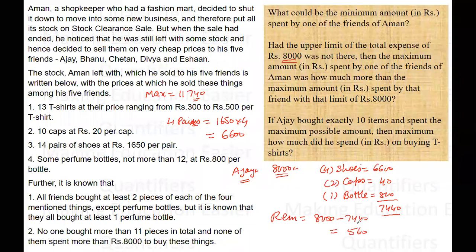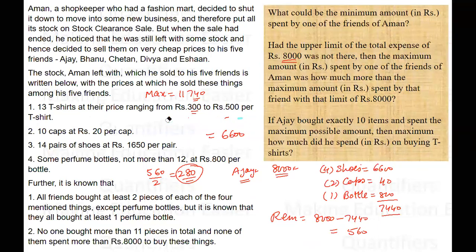With the remaining 560 rupees, he needs to buy at least two T-shirts. If he buys minimum two T-shirts, the cost per T-shirt comes out to be 280 rupees, which is not possible — the minimum cost for a T-shirt is 300 rupees. So with four pairs of shoes, buying other items at the lowest requirement (two caps and one perfume), he still cannot buy two T-shirts. That means four pairs of shoes is not possible at all.